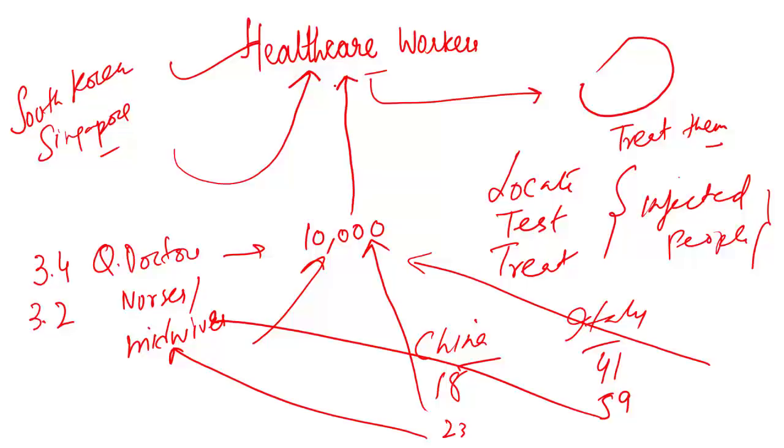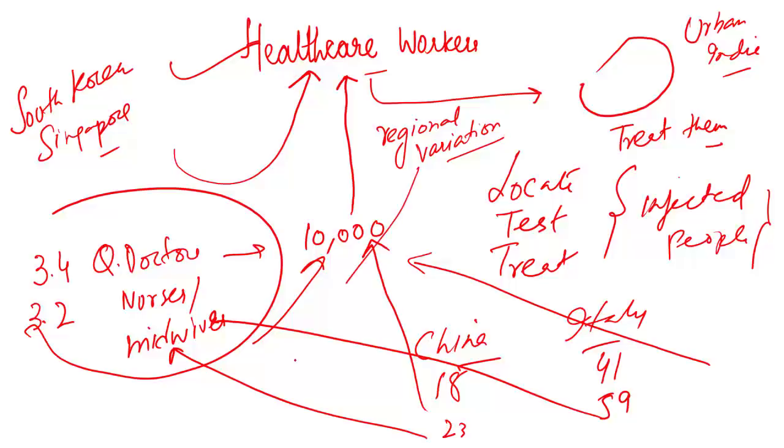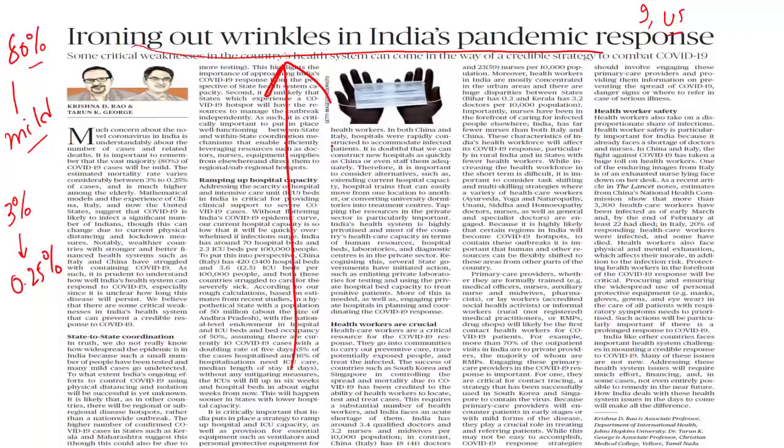On top of that, there is another problem. Even these healthcare workers that we have, they are concentrated in urban India. Not only concentrated in urban India, there is regional variation as well or regional imbalances as well. For example, Kerala and Bihar. In Kerala, we have 3.2 doctors per 10,000 population and this figure is only 0.3 in Bihar. So our response will be poor in rural India. Our response will be poor in areas where healthcare workers are less. On top of that, we need to ensure the safety of these healthcare workers as well. One reason for that is we are already facing shortage of doctors and nurses. That is what you need to understand from this newspaper column.